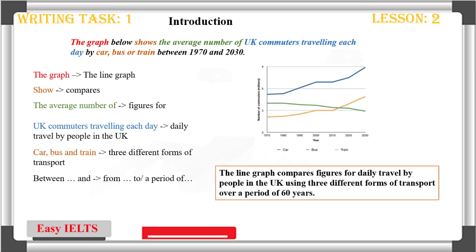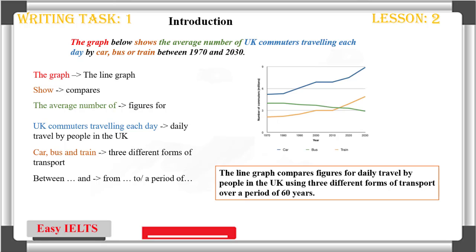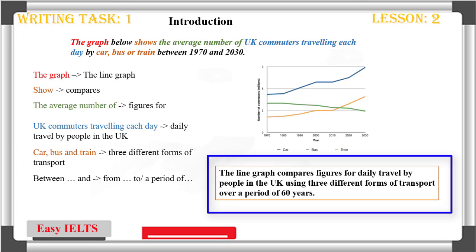You can also simply rephrase certain parts. For example, in the graph's description it reads 'UK commuters travelling each day.' By using the words 'travelling' and 'day', I could rephrase it into 'daily travel by people in the UK.' Lastly, generalising or writing certain parts of the sentence more specifically will also help. In our example, instead of saying 'the graph', I will use 'the line graph', which is more specific. On the other hand, instead of using 'car, bus and train', I have decided to generalise and use 'form of transport'. Combining all of those techniques will allow you to change the description of the graph into your introduction.